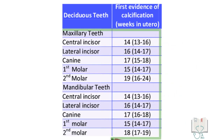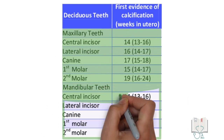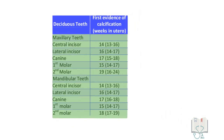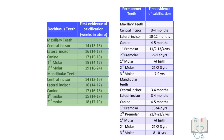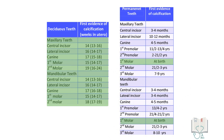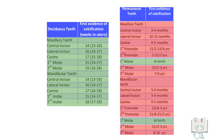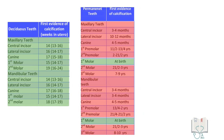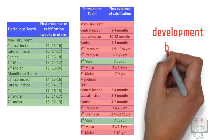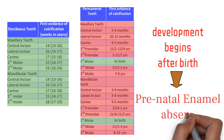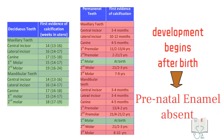In deciduous dentition, the neonatal line is present in all teeth. But in permanent dentition, the neonatal line is present only in first molars, as development of all other permanent teeth begins after birth and so they have no prenatal enamel.